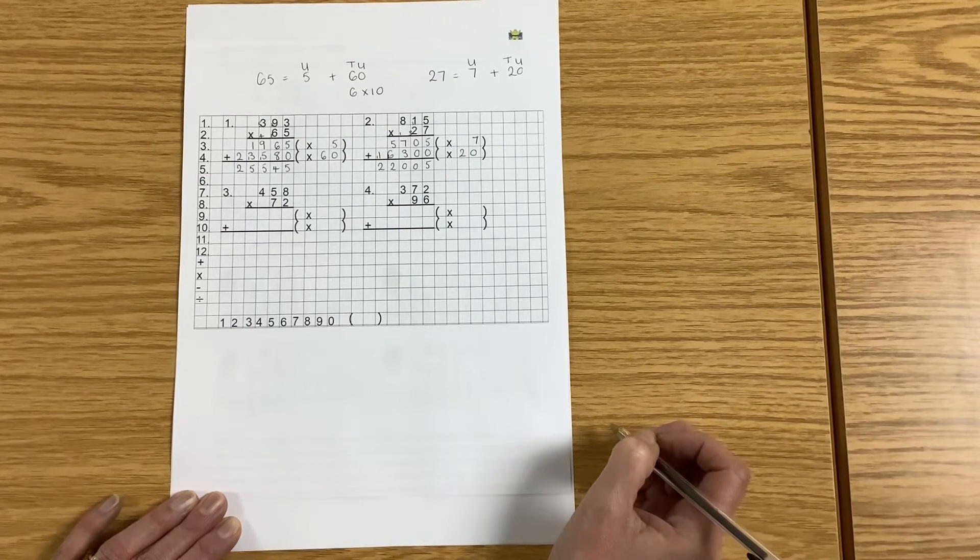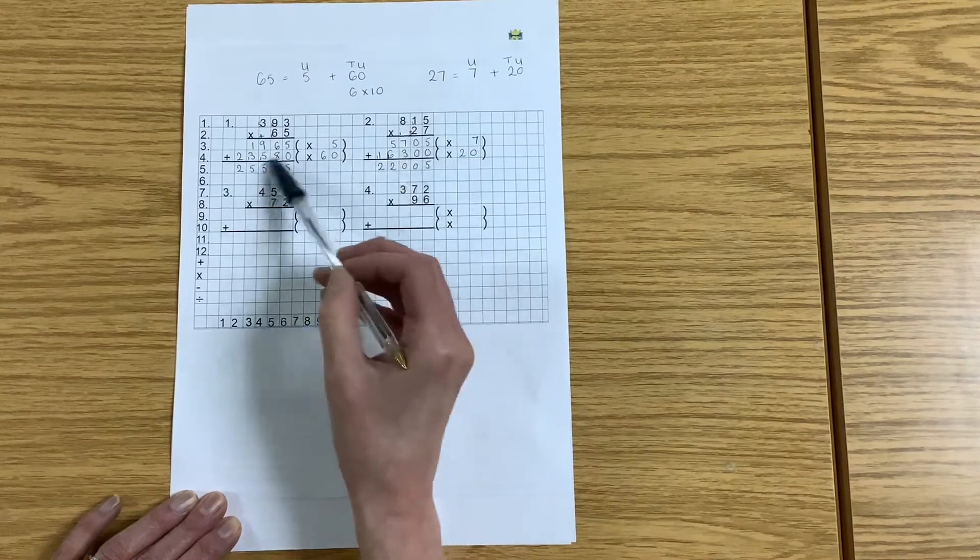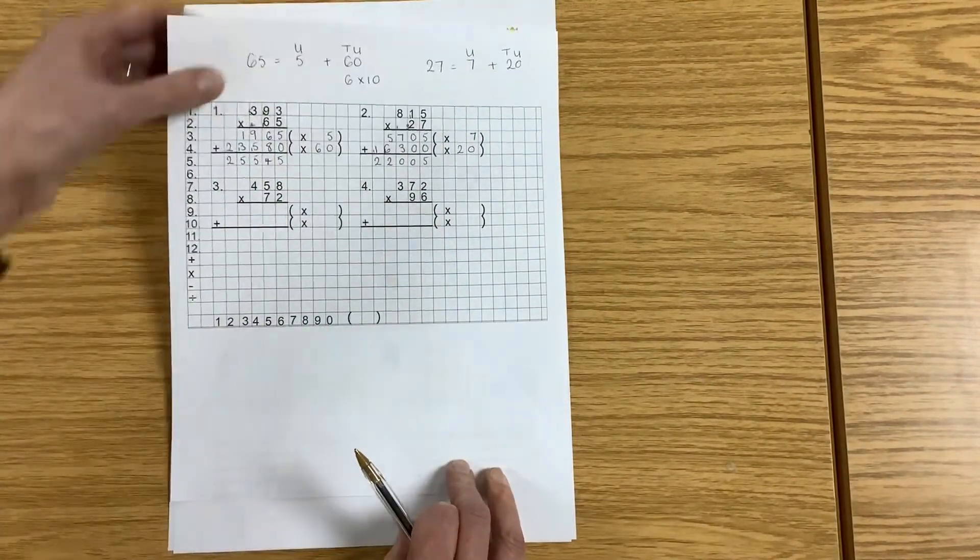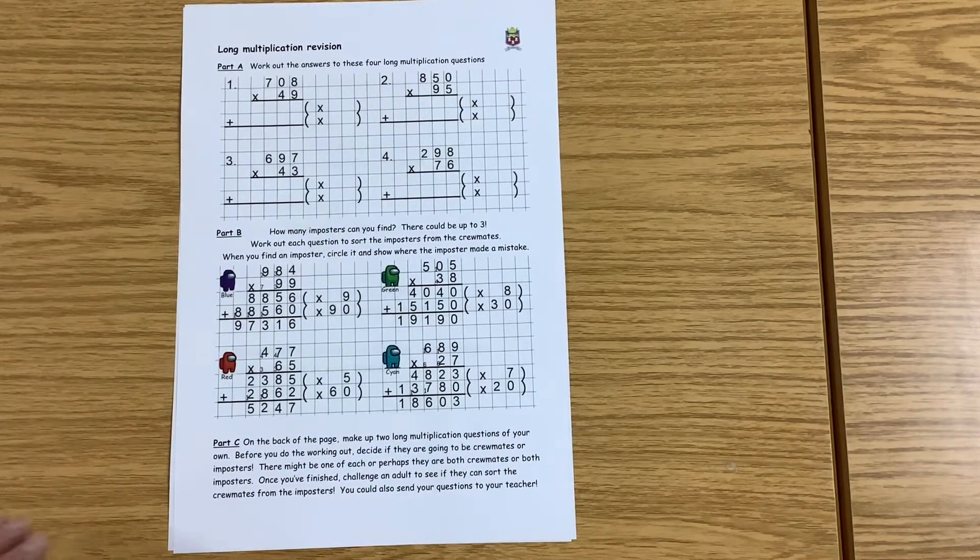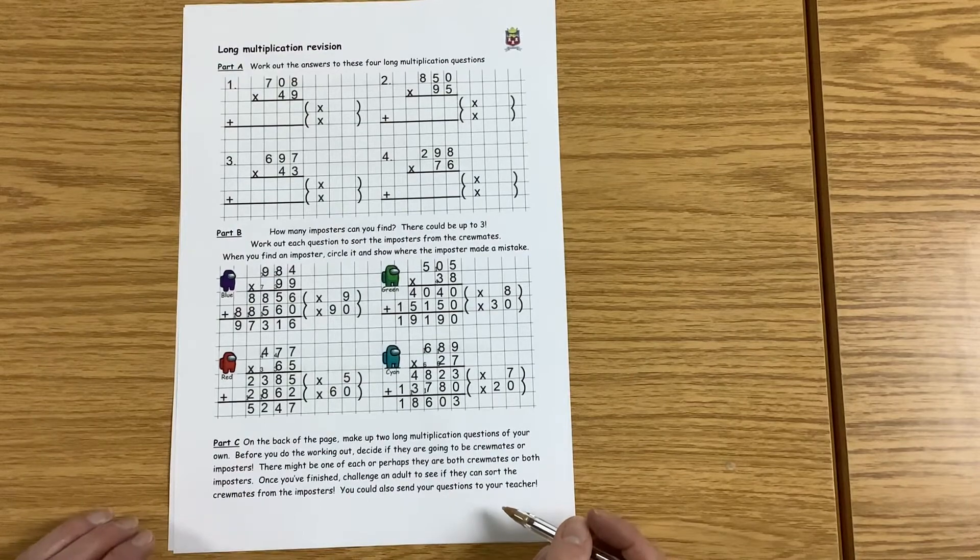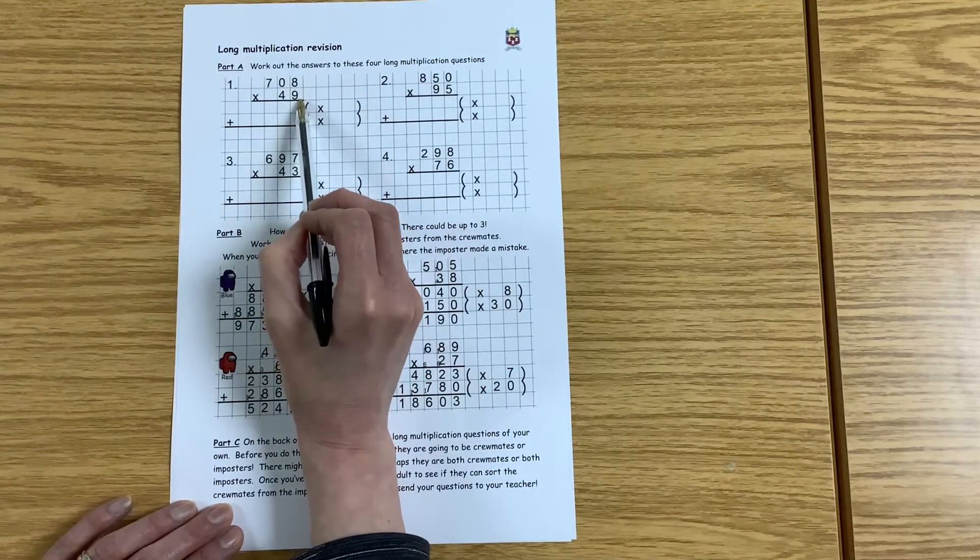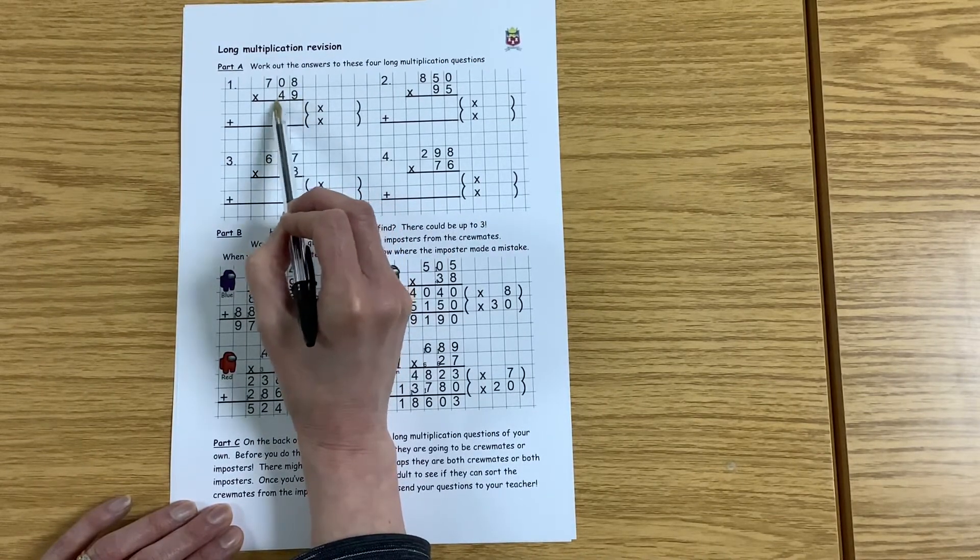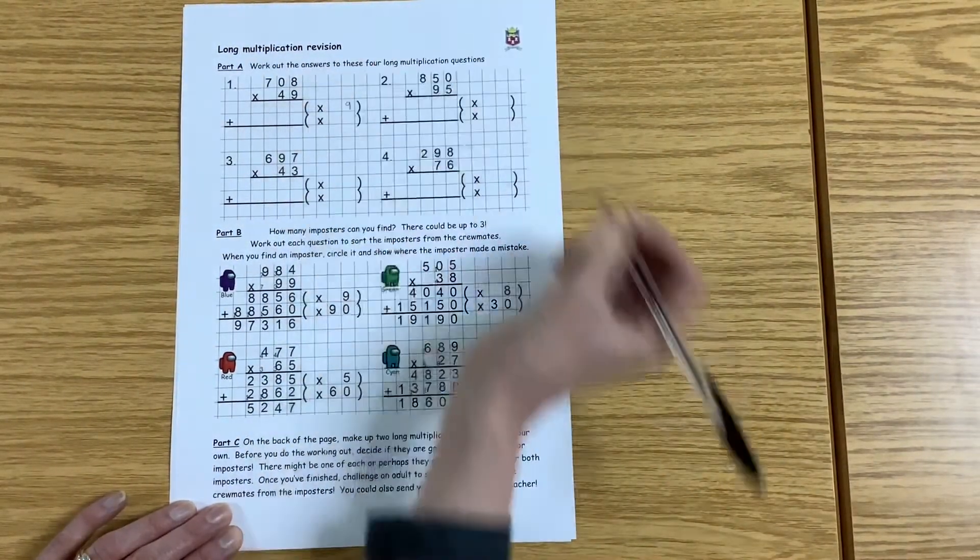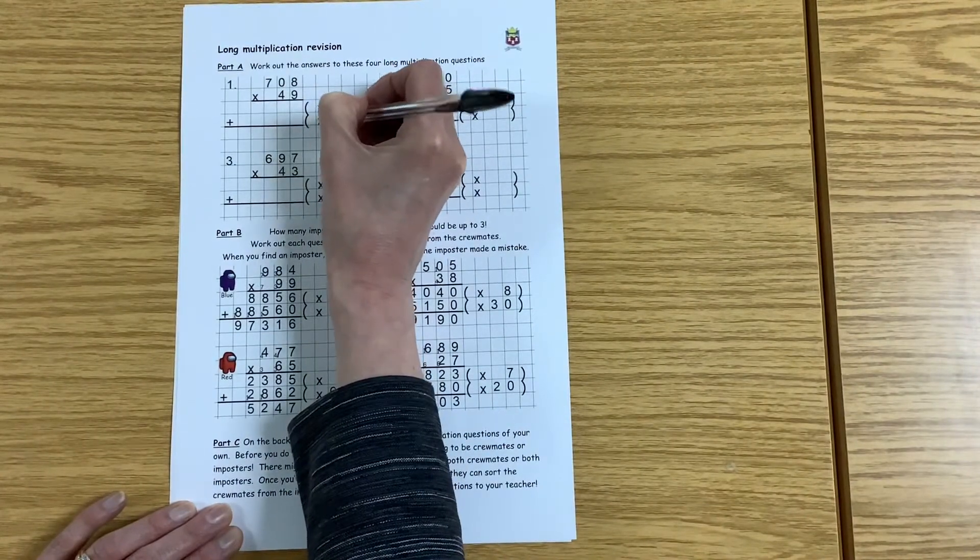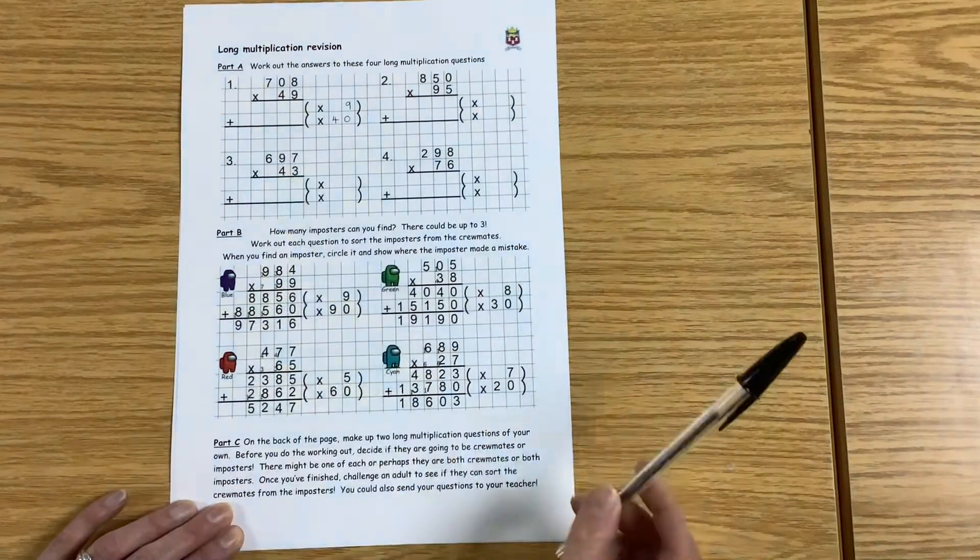So today P6, for your task, if you need to, if you're still getting a little bit confused, rewind back and watch what we've just done again. But for your main task today, you are going to be completing this page. You've been given 4 questions to work out. Do your writing on the page. Don't forget we start off by multiplying by the number in the units. So for this one, I'll begin by multiplying by 9, then by 40, and then I'll add my two answers together.